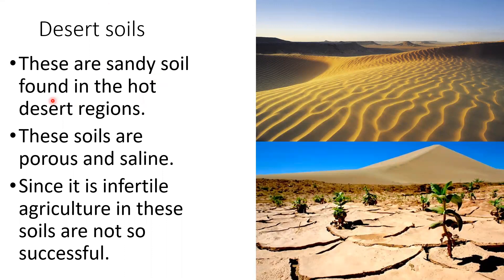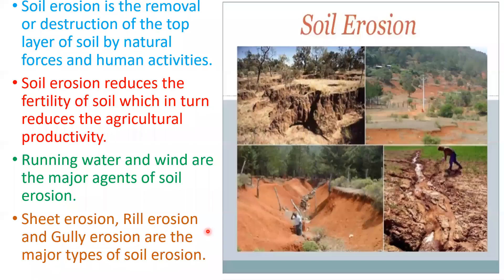Desert soils are sandy soils found in hot desert regions. These soils are porous and saline. Porous means they absorb water easily. Since these soils are infertile, agriculture in them is not very successful.